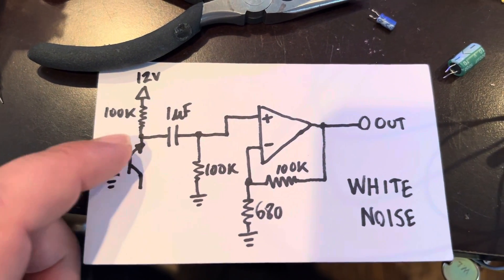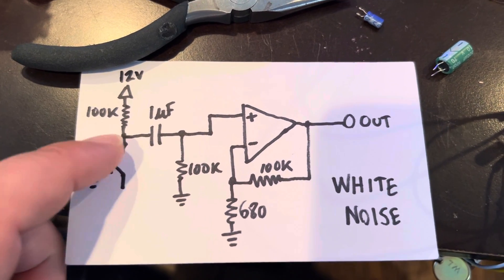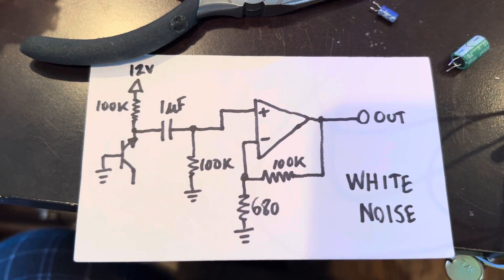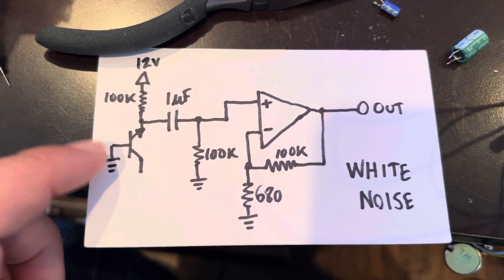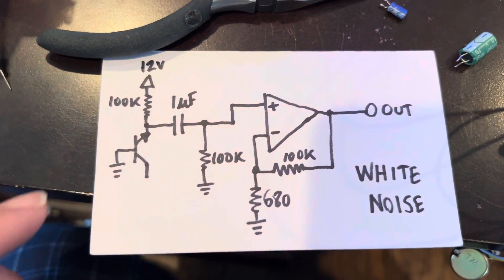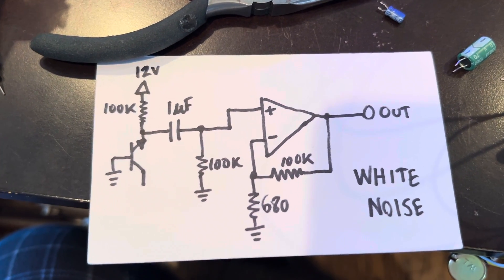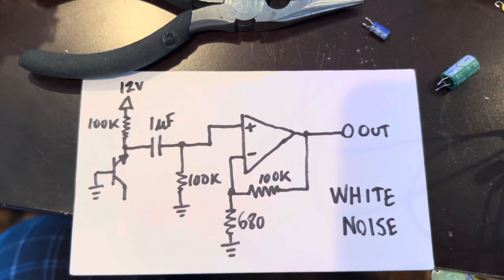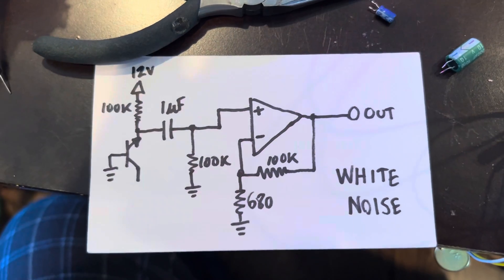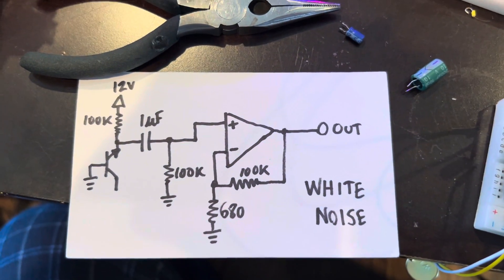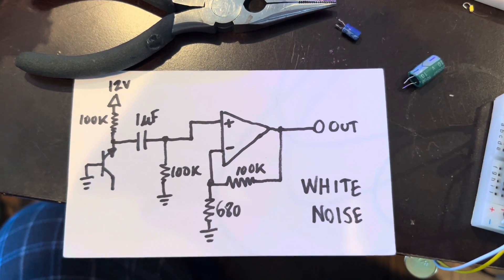You could take the output off of the base, or you could take it off of the emitter itself and do whatever you want with it in terms of processing after that. White noise—very simple circuit. Thanks for watching.